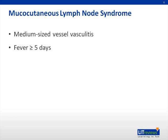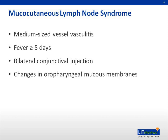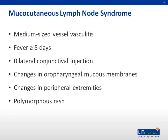Fever for at least five days is a mandatory criterion, and the presence of four of five other principal criteria is also required for diagnosis. These include: one, bilateral, non-exudative, bulbar conjunctival injection with limbal sparing; two, changes in the lips and oral cavity, including erythema or diffuse injection of the oral and pharyngeal mucosa, strawberry tongue, and lip cracking; three, changes in the extremities, including edema and erythema of the hands and feet, or periungal peeling involving the fingers and toes; four, polymorphous rash; and five, non-suppurative cervical lymphadenopathy with at least one node measuring greater than 1.5 centimeters in diameter.